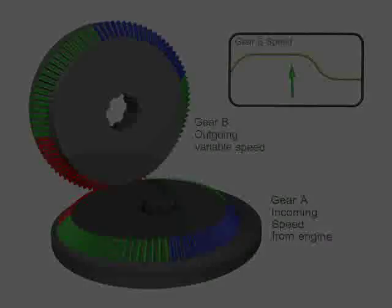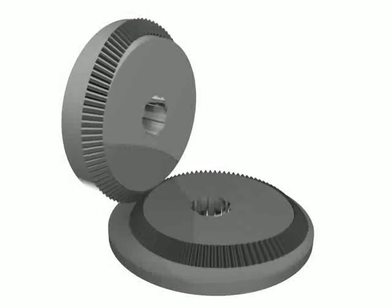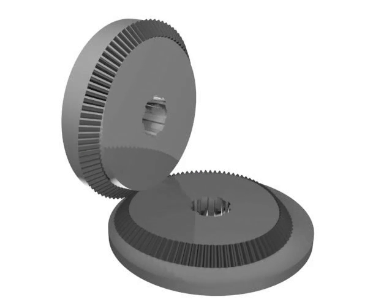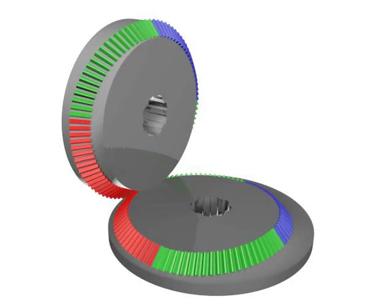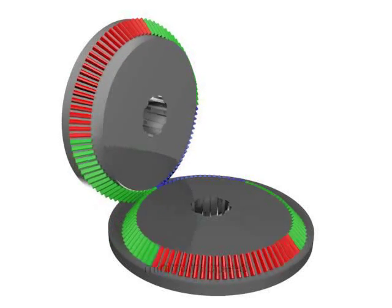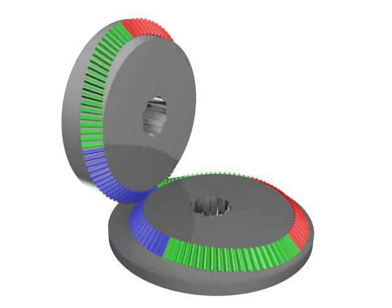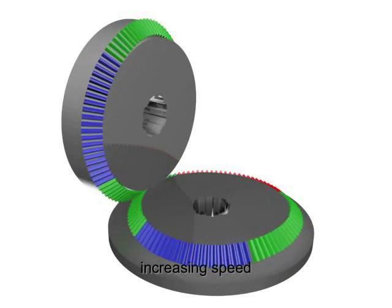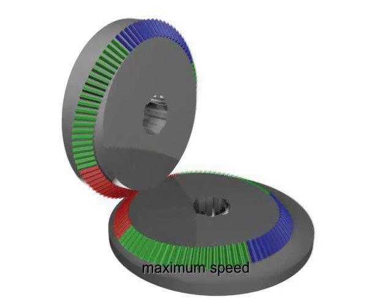Let's take a closer and detailed look. The speed phases are: decreasing speed space, minimum speed space, increasing speed space, and maximum speed space.